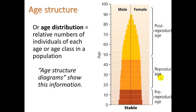Age structure is also called age distribution. It means the relative numbers of individuals of each age or age class in a population. This diagram we call an age structure diagram. It takes different ages and breaks it into years — it's like a snapshot. If you were to look at a population, you would add up how many individuals are between 0 and 5 years old, 5 and 10, 10 and 15, 15 and 20, and so on. How far from the central axis indicates how many there are. We can see that there are fewer people in the older ages, which is not unexpected as people die.